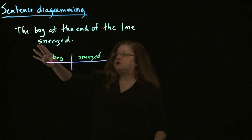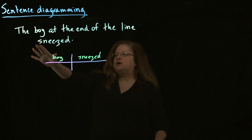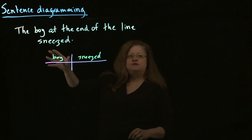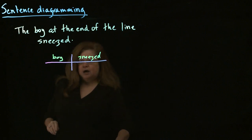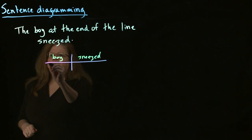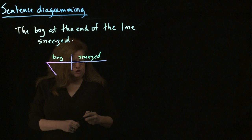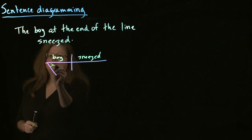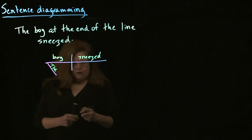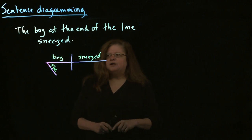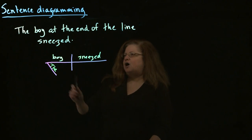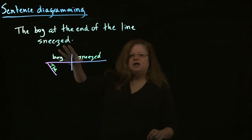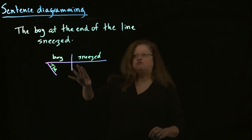So that is the core of our sentence. There's one other thing we already know how to deal with, which is the determiner 'the' — basically an adjective that says which one. So 'the' is attached to 'boy.' Now we have these other components in the sentence that we want to place, and these are both prepositional phrases.